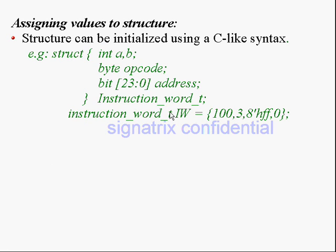Here is one example showing how to assign values to the members in a structure. Structure can be initialized using a C-like syntax. For example, the structure name is instruction_word_t, with int, byte, and bit as data types. For int you are assigning 103 — A is equal to 100, B is equal to 3. For opcode, which is a byte type, you assign 8'hFF. For the address, which is a 24-bit bit type, you initialize to 0 — all bits to 0. We use braces to assign these values.